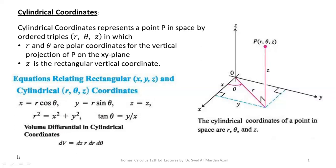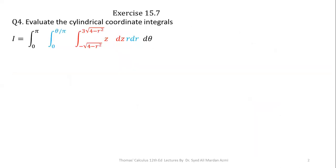In order to integrate a triple integral in three-dimensional space in cylindrical coordinates, we will always take the small differential volume element as dV equal to dz R dr d-theta. Next, we will learn question number four from exercise 15.7 of Thomas Calculus 12th edition.